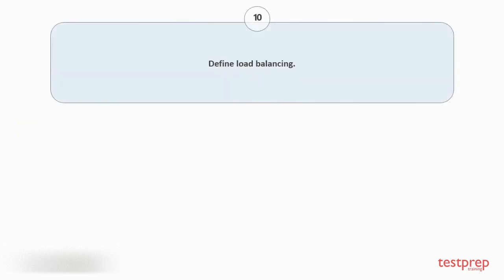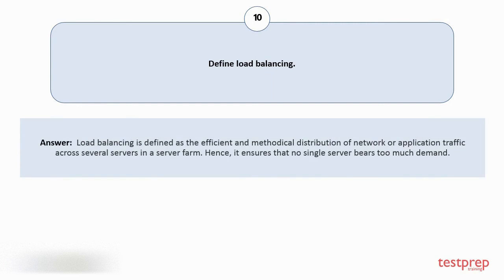Question number 10: Define load balancing. Load balancing is defined as the efficient and methodical distribution of network or application traffic across several servers in a server farm. Hence, it ensures that no single server bears too much demand.